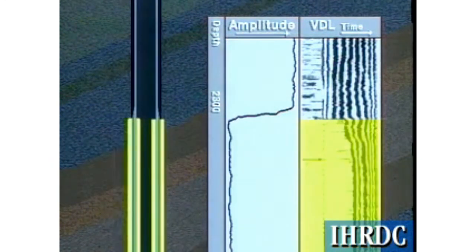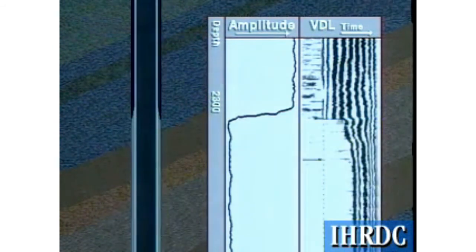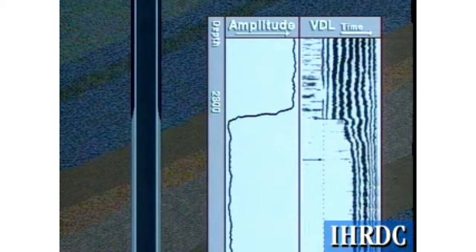In an interval with a very good bond, the pipe portion of the VDL does not show up, because the amplitude of the wavetrain is too low to expose the film. The formation signal, however, comes in strongly.